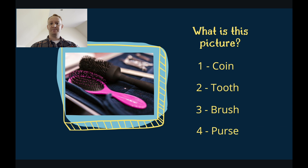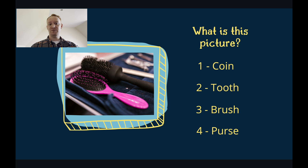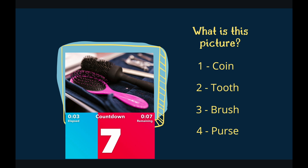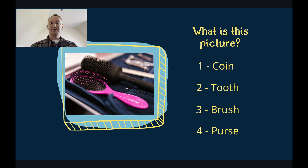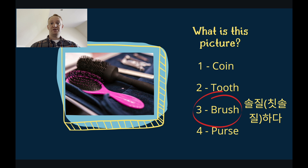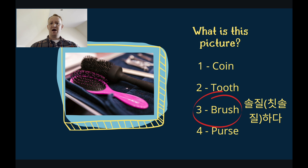What is this a picture of? Is it a coin? Is it a tooth? Is it a brush? Or is it a purse? You have 10 seconds to answer. It was of course a brush. There are two brushes. One brush is pink, the other brush is black. We use these brushes to comb or brush our hair.